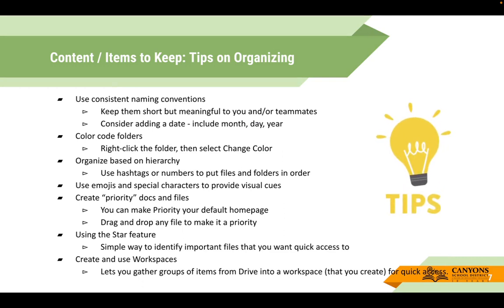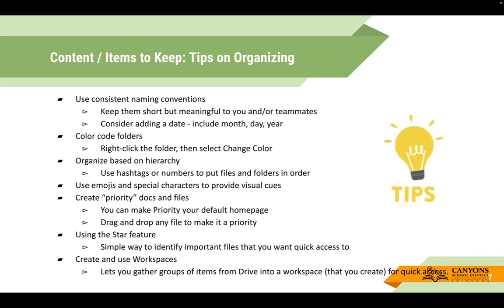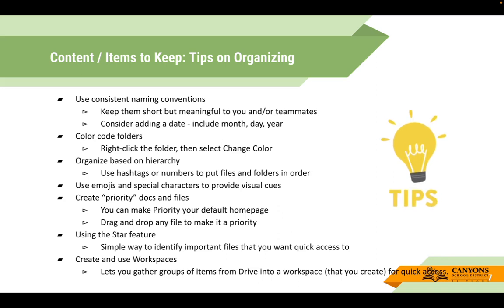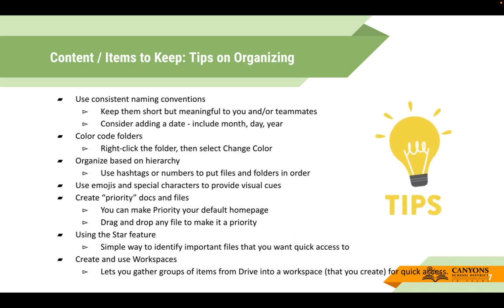When it comes to keeping your items, there are some organizing tips to consider. Use consistent naming conventions — keep them short but meaningful to you and your teammates. Consider adding a date including the month, day, and year; that can help when you do those quick filters and gives a quick glimpse into when things were created. You can color code folders in Google Drive by right-clicking on the folder and selecting the color change — it gives a visual representation of different items in your drive. You can also organize content based on hierarchy by using hashtags or numbers when naming files so they show up in numerical order. Another way to provide a visual cue is to use emojis or special characters when naming your files and folders.